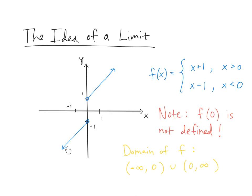Similarly, on the left, if I approach 0 from the left along the function, my x coming to 0 from the left, I see that my function is tending towards the value negative 1. Even though the function doesn't take on any value whatsoever at 0, as x approaches 0 from the left, it still makes clear intuitive sense that the function is approaching the value negative 1. This is really all that's contained in the idea of a limit — the tendency of the function as x approaches some value, whether from the right or from the left.